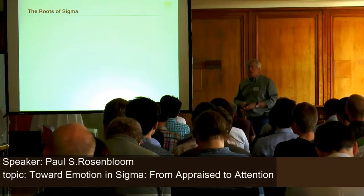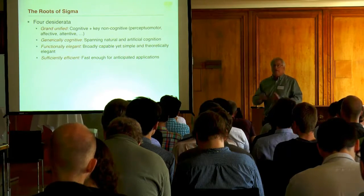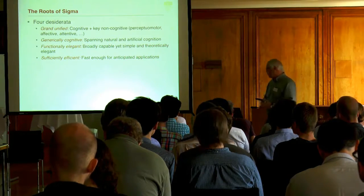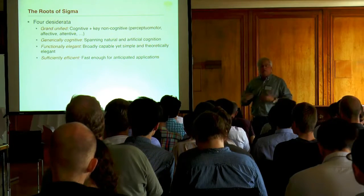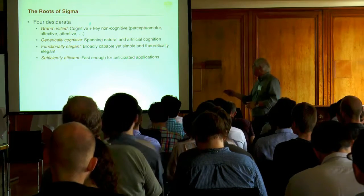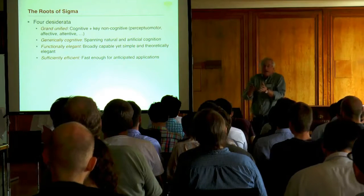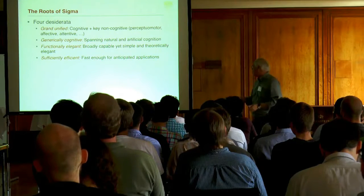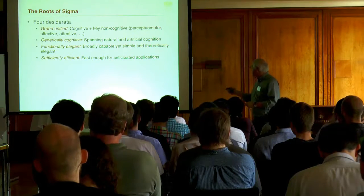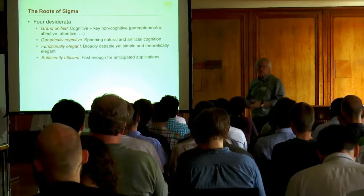The roots of Sigma as a cognitive architecture are based on four desiderata. Grand unified means combining traditional symbolic aspects with all the sub-symbolic aspects required for complete intelligent behavior, including perception, motor, affective, and attentive components. Generically cognitive spans both natural and artificial cognition. Functionally elegant means producing broad capabilities from interactions among a small general set of mechanisms. And sufficiently efficient, not necessarily optimal, but runs fast enough for behaving in real time.